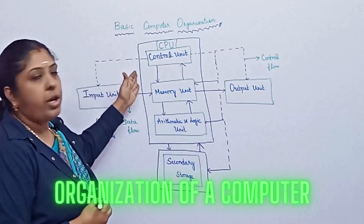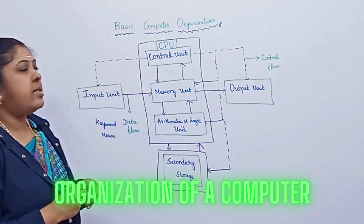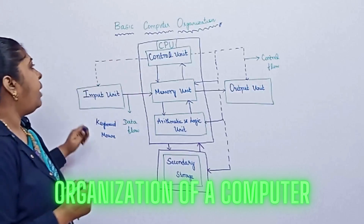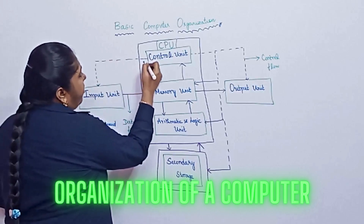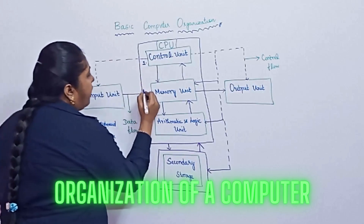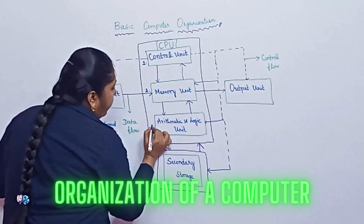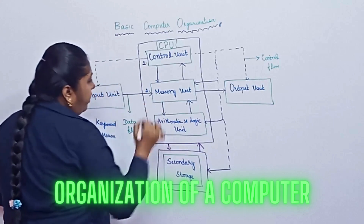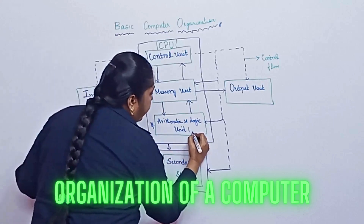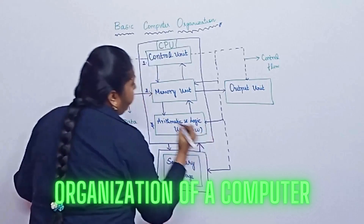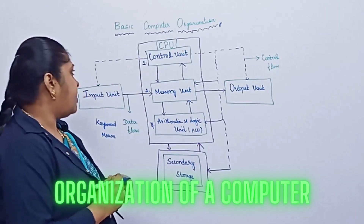After feeding into the input unit, the CPU takes over. The CPU consists of three subdivisions: one — the control unit, two — the memory unit, and three — the arithmetic and logic unit, also known as the ALU.